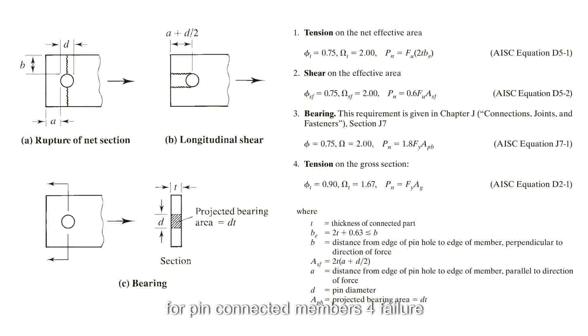For pin connected members, four failure conditions need to be evaluated and checked. These are tension rupture, which is calculated by multiplying the effective area by the ultimate strength. Shear, which is evaluated by multiplying the area of the shear path in the direction of the load by the ultimate strength reduced by 40 percent.